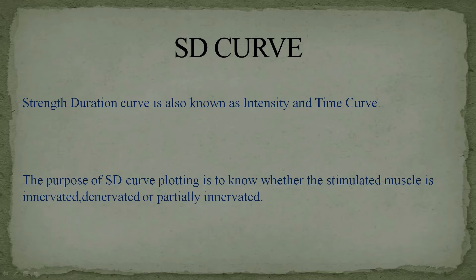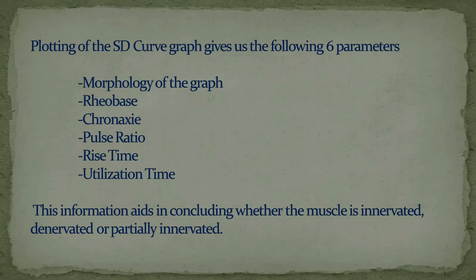The strength-duration (SD) curve is also known as the intensity-time curve. SD curve plotting is done to determine whether the stimulated muscle is innervated, denervated, or partially innervated. Plotting the SD curve graph provides six parameters: morphology of the graph, riobase, chronaxie, pulse ratio, rise time, and utilization time.